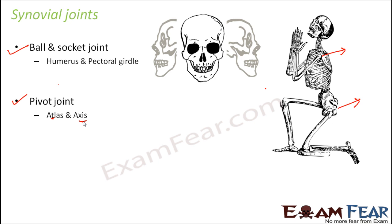These joints are given the special names atlas and axis — those are the points where the pivot joint is present. In a pivot joint, it allows a rotatory movement around a single axis. You can move it this way or that way around that axis.